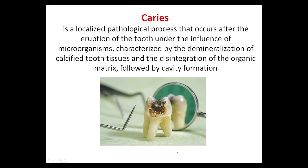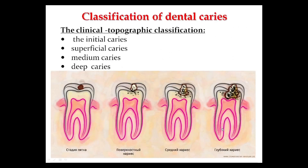The last part of our lecture is classification of dental caries. First, the definition: caries is a localized pathological process that occurs after the eruption of the tooth, under the influence of microorganisms, characterized by the demineralization of calcified tooth tissue and the disintegration of the organic matrix, followed by cavity formation.